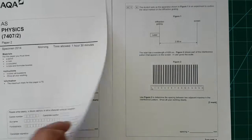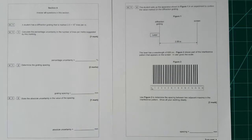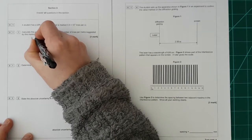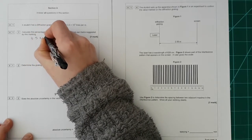We'll start with question 1. The student has a diffraction grating that is marked 3.5 times 10 to the 3 lines per meter. Calculate the percentage uncertainty in the number of lines per meter suggested by this marking. This question is one of those ones where you need to learn some of the rules that AQA have decided on for percentage uncertainties.